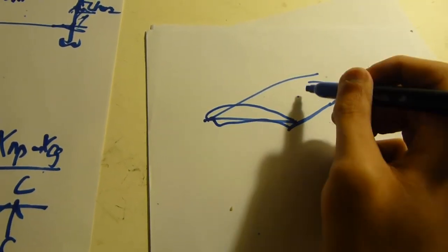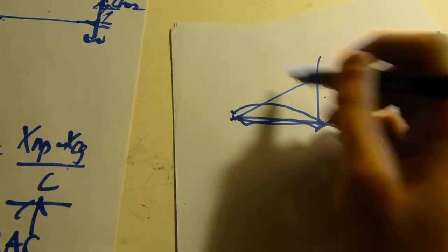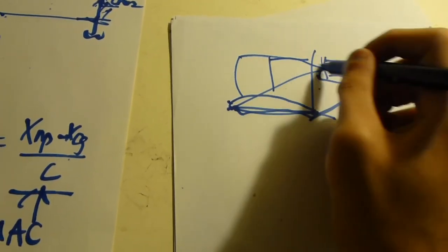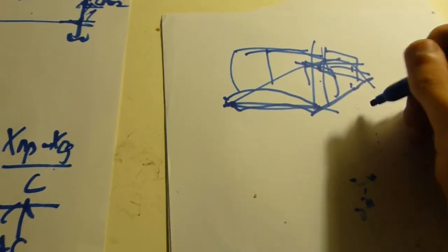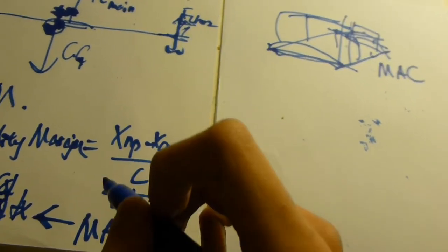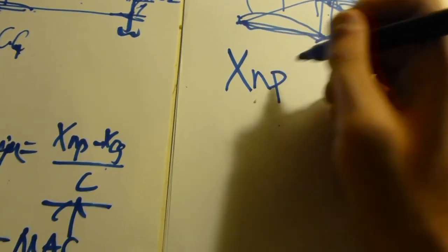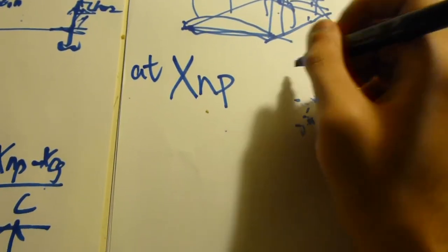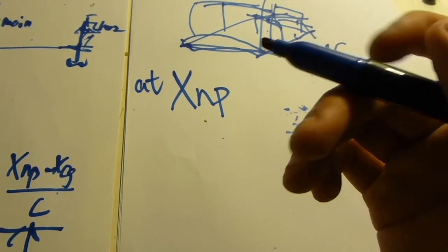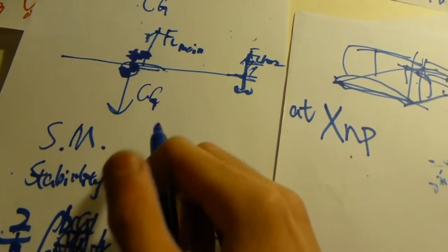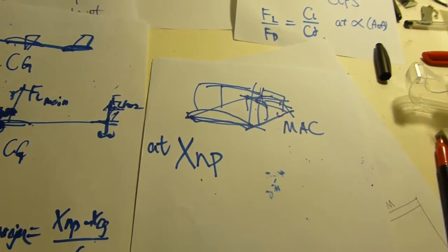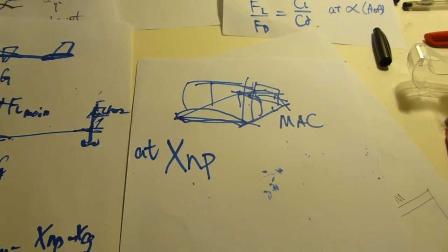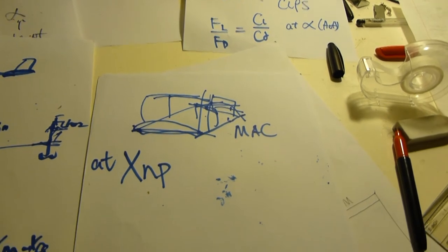It's better to write: stability margin is XMP minus XCG divided by C. What's C? C is the mean aerodynamic chord of the main wing. And what's the mean aerodynamic chord of the main wing? It's defined by the integral from zero to wingspan of C of x dx. You just imagine you get some maybe trapezoid, and you get from root chord to mean chord, and you got that thing squared. That's just the intuitive way of remembering the formula.